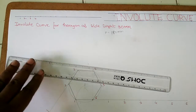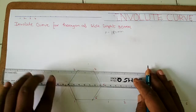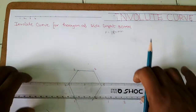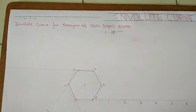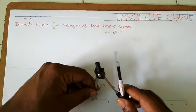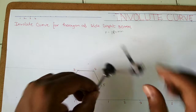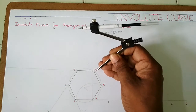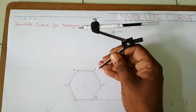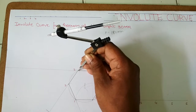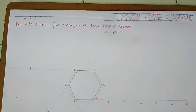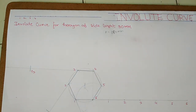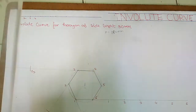Now the next tangent will be drawn at the following vertex. This gives us P3.